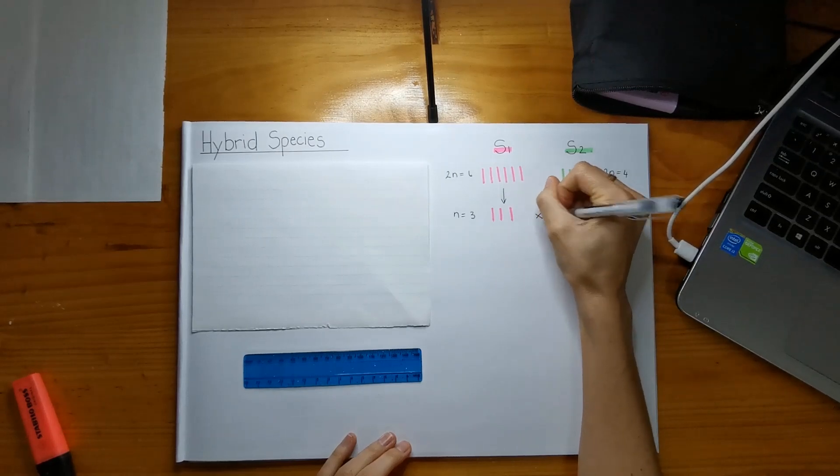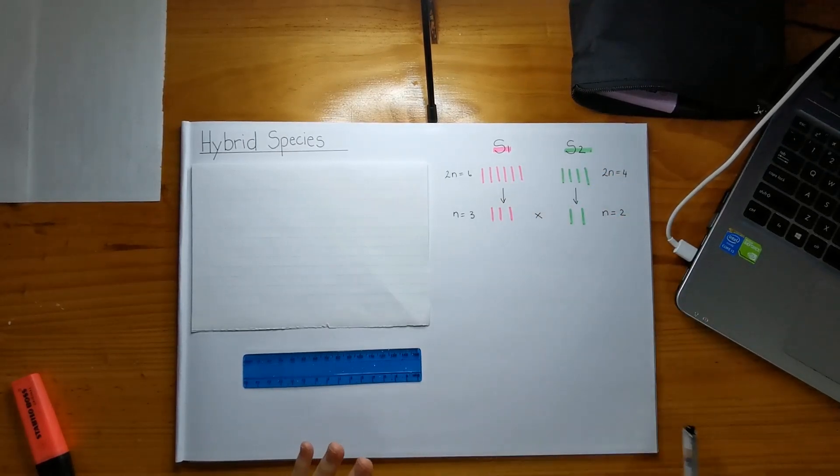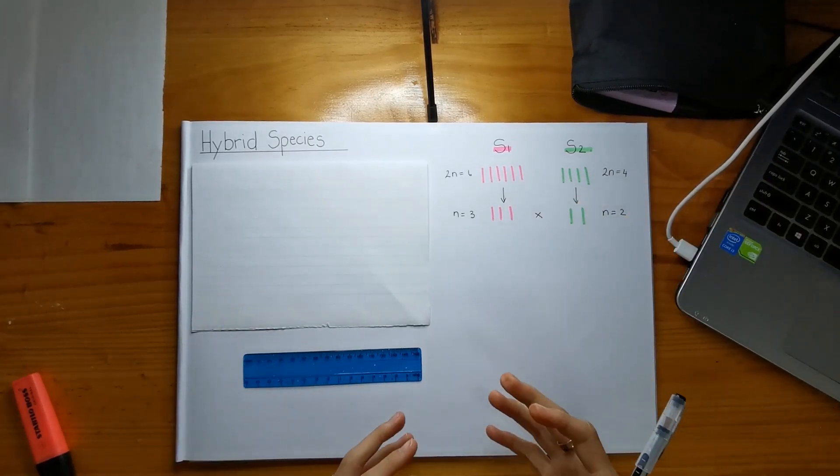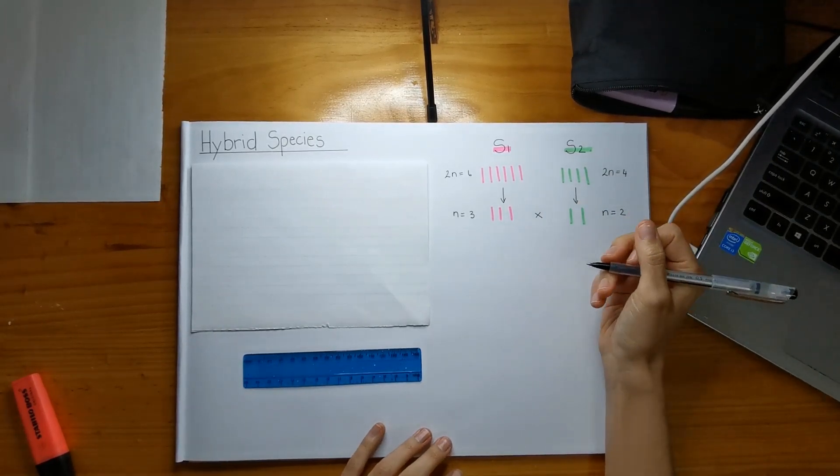So now if these two, species 1 and species 2, were to mate, this is what their cell, or the cell, would look like during meiosis.